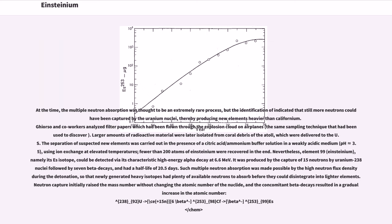At the time, the multiple neutron absorption was thought to be an extremely rare process, but the identification indicated that still more neutrons could have been captured by the uranium nuclei, thereby producing new elements heavier than Californium. Giorso and co-workers analyzed filter papers which had been flown through the explosion cloud on airplanes. Larger amounts of radioactive material were later isolated from coral debris of the atoll, which were delivered to the U.S. The separation of suspected new elements was carried out in the presence of a citric acid-ammonium buffer solution in a weakly acidic medium, pH 3.5, using ion exchange at elevated temperatures. Fewer than 200 atoms of Einsteinium were recovered in the end.